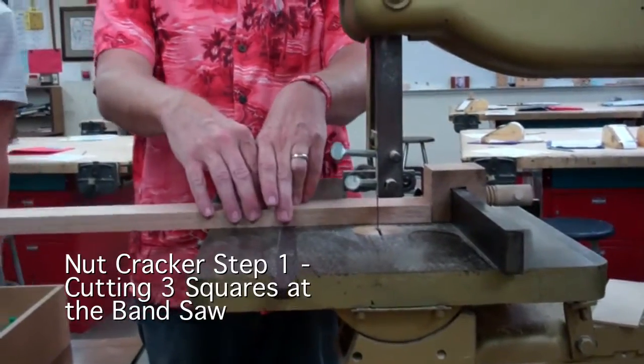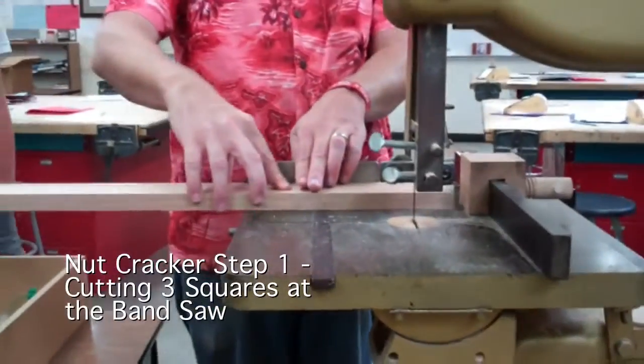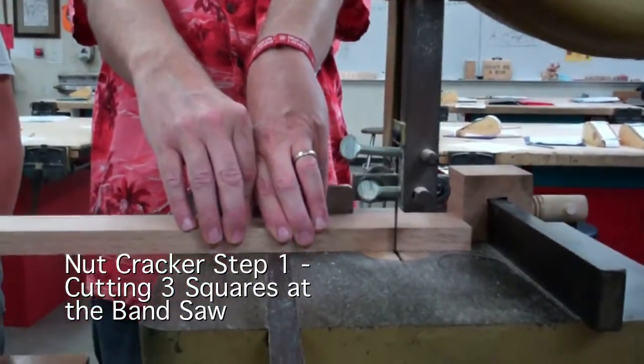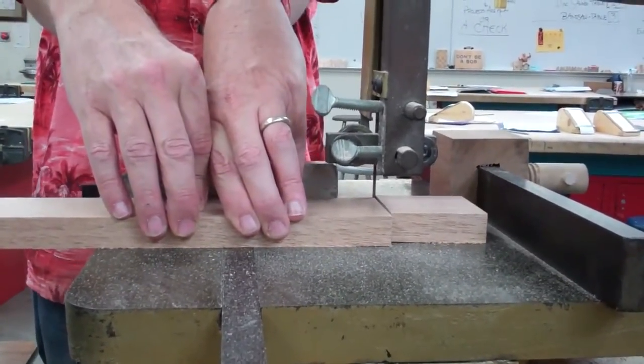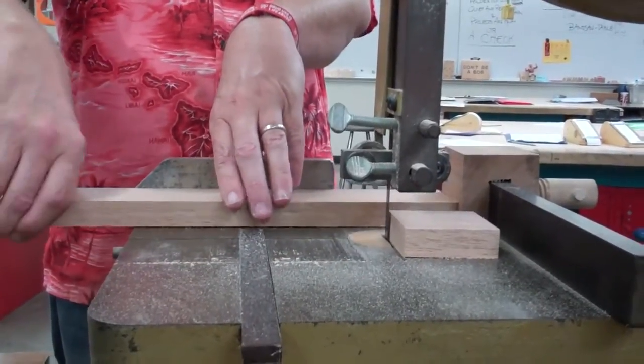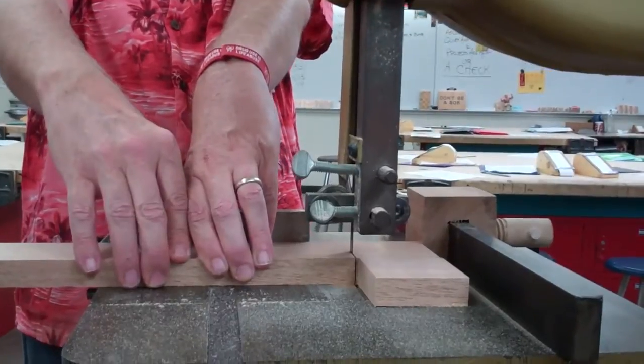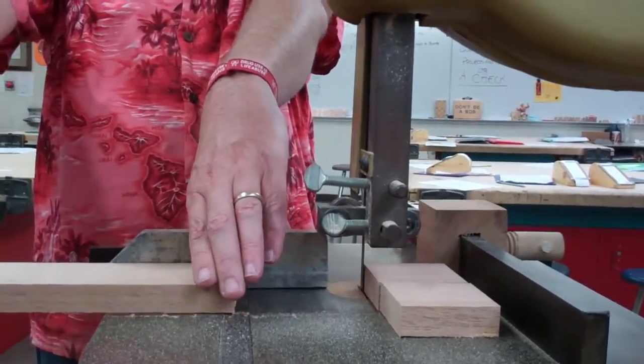Put it up against the guide block and push it through. Put it up against the nutcracker and go slowly through. Don't pull it straight back. Put it away from the blade. Cut again. Go slowly through. Move it away from the blade.